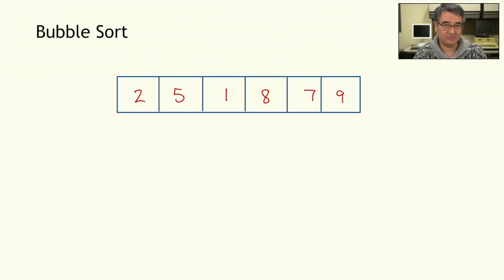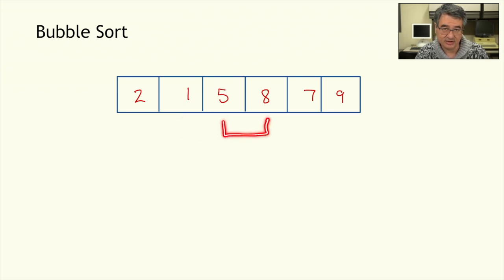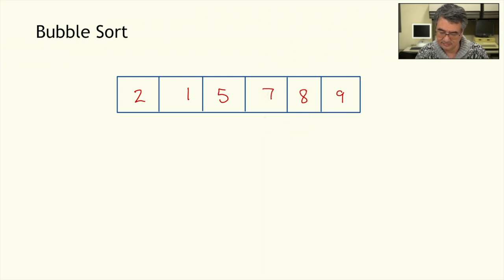Let's make another pass through the array. The first two elements, 2 and 5, are in the correct order. 5 and 1 need to be swapped. 5 and 8 are in the correct order. 8 and 7 need to be swapped. And then 8 and 9 are in the correct order.